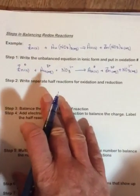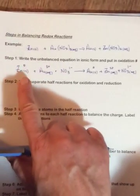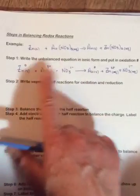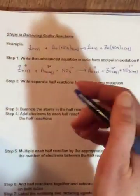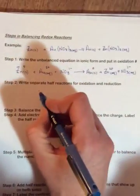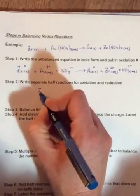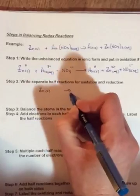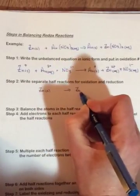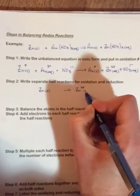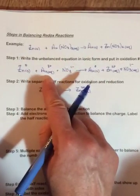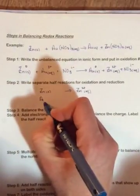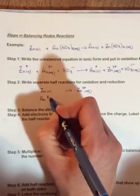Now write the separate half reactions. So take a look—zinc on one side, zinc on the other. Its oxidation number has changed, and therefore it has undergone a reaction. So it's zinc solid going to zinc two positive aqueous. Gold was three positive going to zero, so gold has also undergone a reaction—three positive on this side, solid on this side.